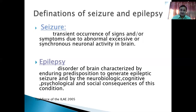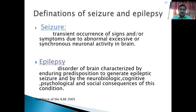Whereas epilepsy is a condition and disorder of the brain which is characterized by enduring predisposition to generate the epileptic Caesar and by the neurobiologic, cognitive, psychological and social consequences of this condition. Simply put, Caesar is a condition where there is hypersynchronous abnormal discharges of a group of neurons in the brain. Epilepsy is a disorder where there is a tendency to have recurrent episodes of Caesar.